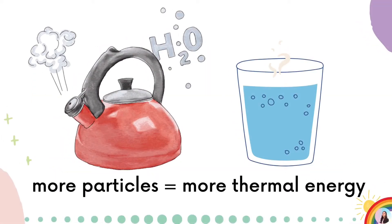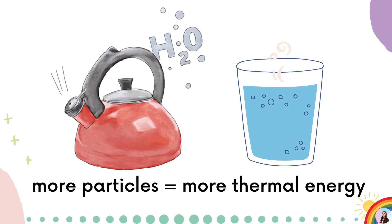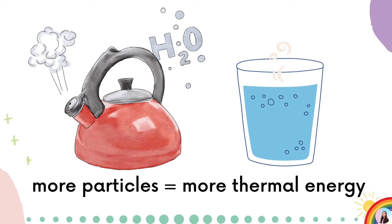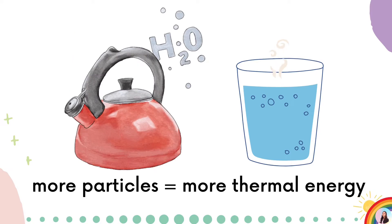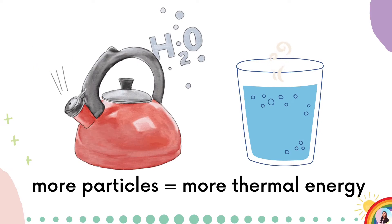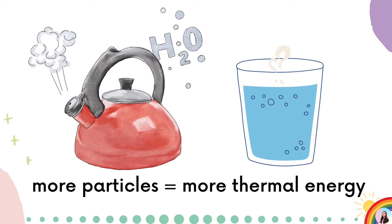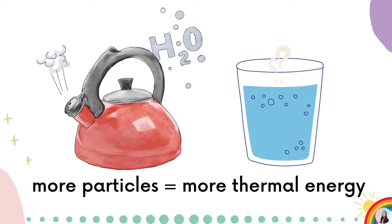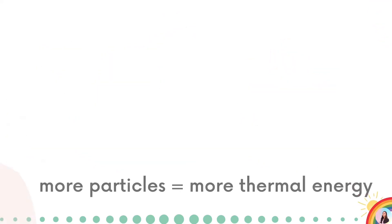Let's say that we have a kettle and a glass full of boiling water at 100 degrees Celsius. Both have the same temperature, but they have different thermal energy. Note that the kettle has more water, which means that it has more particles. And more particles mean that it has more thermal energy.